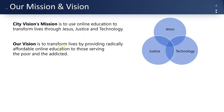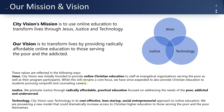Our vision is to transform lives by providing radically affordable online education to those serving the poor and the addicted. The Jesus part means we're doing online Christian education. The justice piece is radically affordable and practical education focused on the needs of the poor, the addicted, and the underserved. And the technology really reflects that we're trying to be very cost effective — we use a methodology called lean startup, we're very entrepreneurial, and that's going to be reflected in our design.